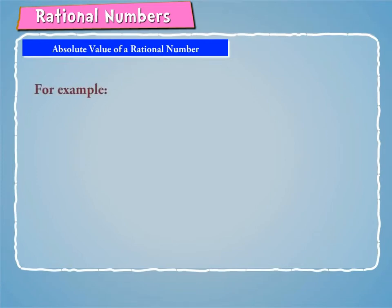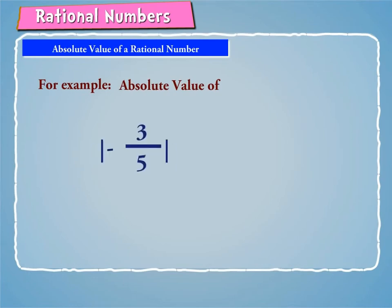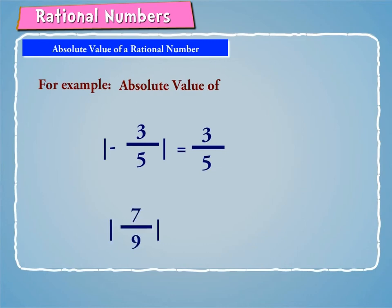For example, the absolute value of minus 3 by 5 is equal to 3 by 5. Similarly, the absolute value of 7 by 9 is 7 by 9.